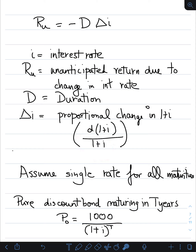We assume a single rate for all maturities, which is the same as saying the yield curve is flat. For a pure discount bond maturing in T years, the price at time zero would be just discounting that price back T times: one thousand divided by (one plus i) to the power of T. There's a full derivation in the book, but the main focus here is understanding the key components of duration and how it's used.